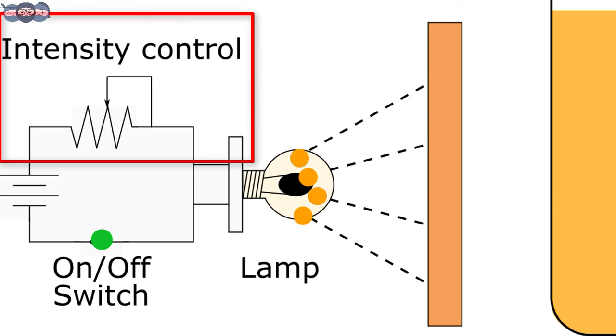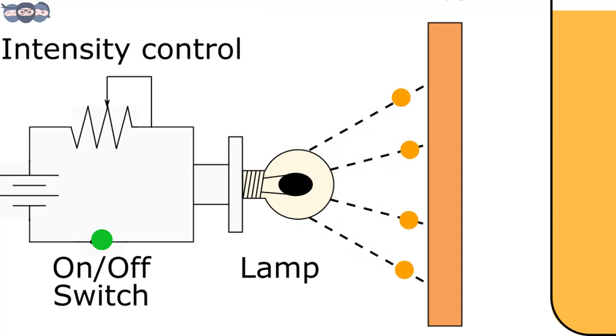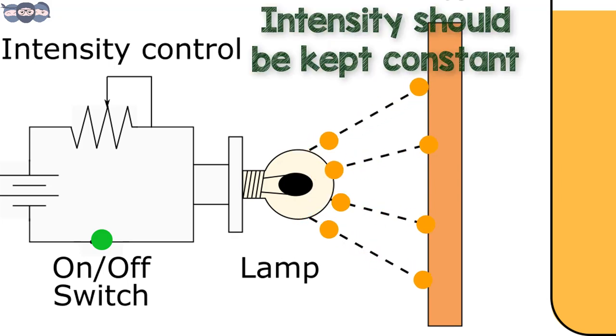An intensity control circuit is used to vary the voltage supply to the tungsten filament lamp. By varying the supply, one can change the intensity. Care should be taken to keep the lamp intensity constant for the duration of the experiment.